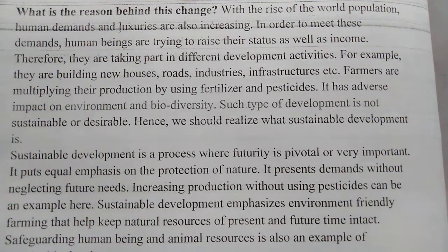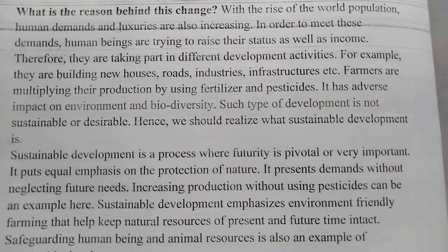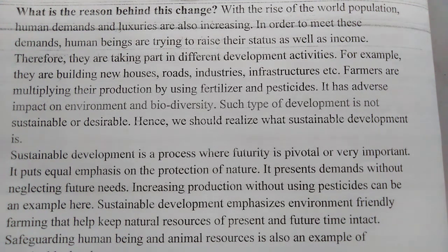Therefore, people are taking part in different development activities — for example, building new houses, roads, culverts, bridges, industries, and other infrastructure. Farmers are multiplying their production by utilizing fertilizers and pesticides, which has adverse impact on environment and biodiversity. Naturally, farmers do not use fertilizers and pesticides, but to get more crops, they use them, and this destroys ecology and pollutes water — causing a negative impact on our environment and biodiversity.